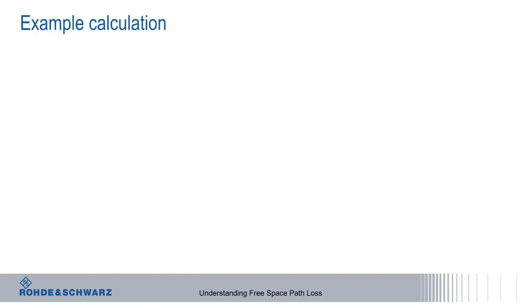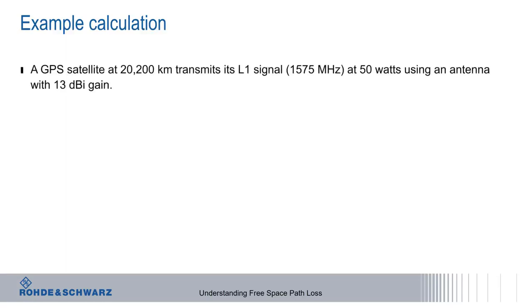Let's work through a realistic free space path loss calculation, including the transmit and receive antenna gains. A GPS satellite at a distance of 20,200 kilometers transmits its L1 signal at 1575 MHz using 50 watts and an antenna with 13 dB of gain. What is the received signal strength on Earth if our receiver has an antenna with 3 dB of gain?